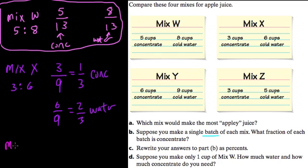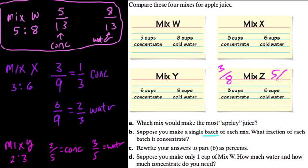What about mix Y, our sweetest mix? Well, mix Y is a ratio of 2 to 3. And we add them up, we get 5. So 2 fifths equals concentrate, which is of course greater than 1 third and greater than 5 thirteenths. And it's 3 fifths of water. And then mix Z, 3 to 5, we add those up we get 8 cups. So we have 3 out of 8, 3 eighths of concentrate and 5 eighths of water.